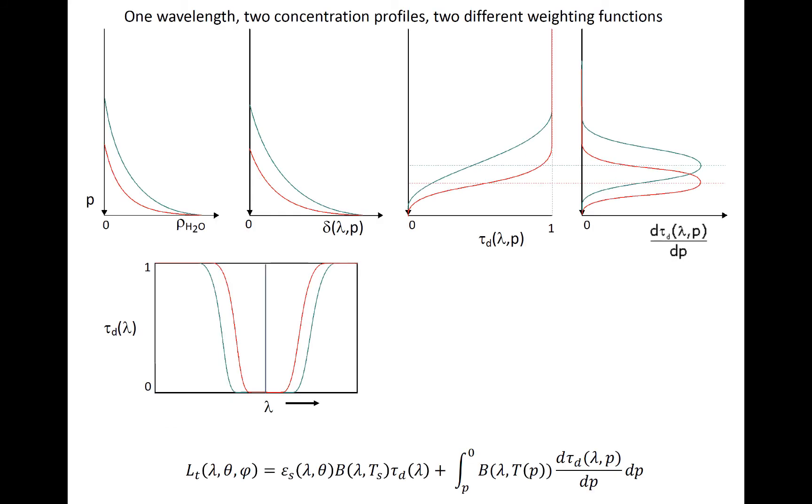For bands that are sensitive to molecules that vary in concentration horizontally, like water vapor, the weighting function will vary substantially as well with space. Suppose you are observing the same scene from a satellite at two different times. One time is moister than the other and has a mixing ratio profile that looks something like the green line. Later, the atmosphere is much drier and the mixing ratio profile more closely resembles the red line.